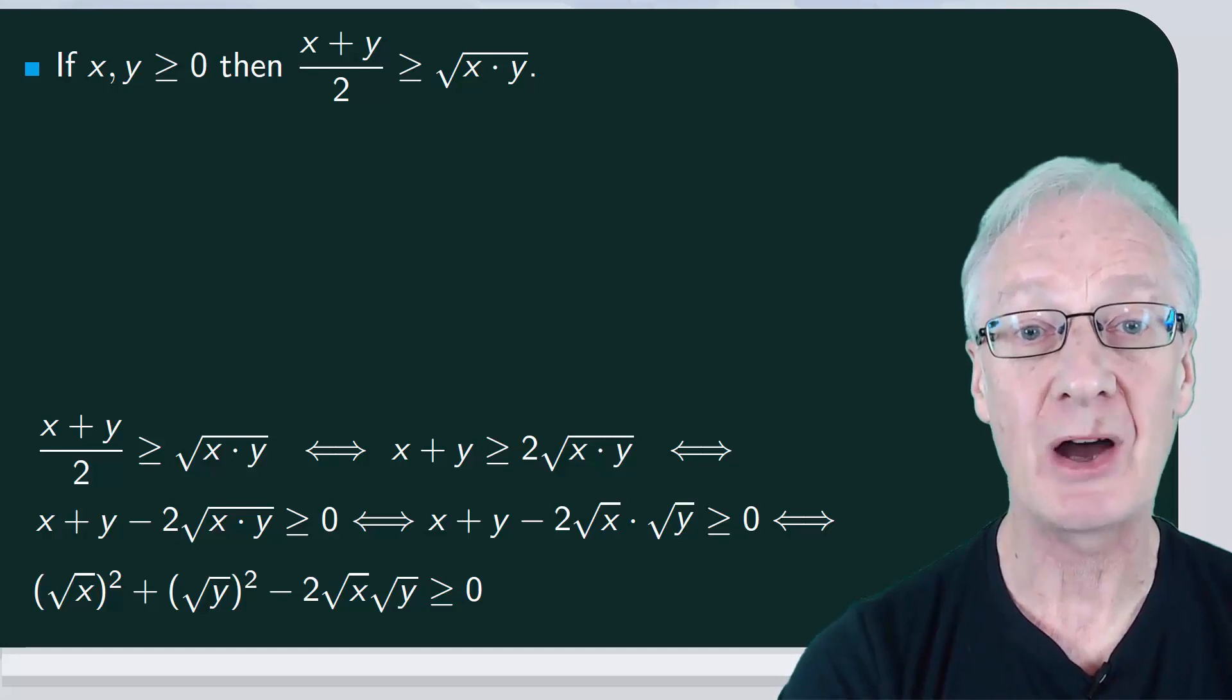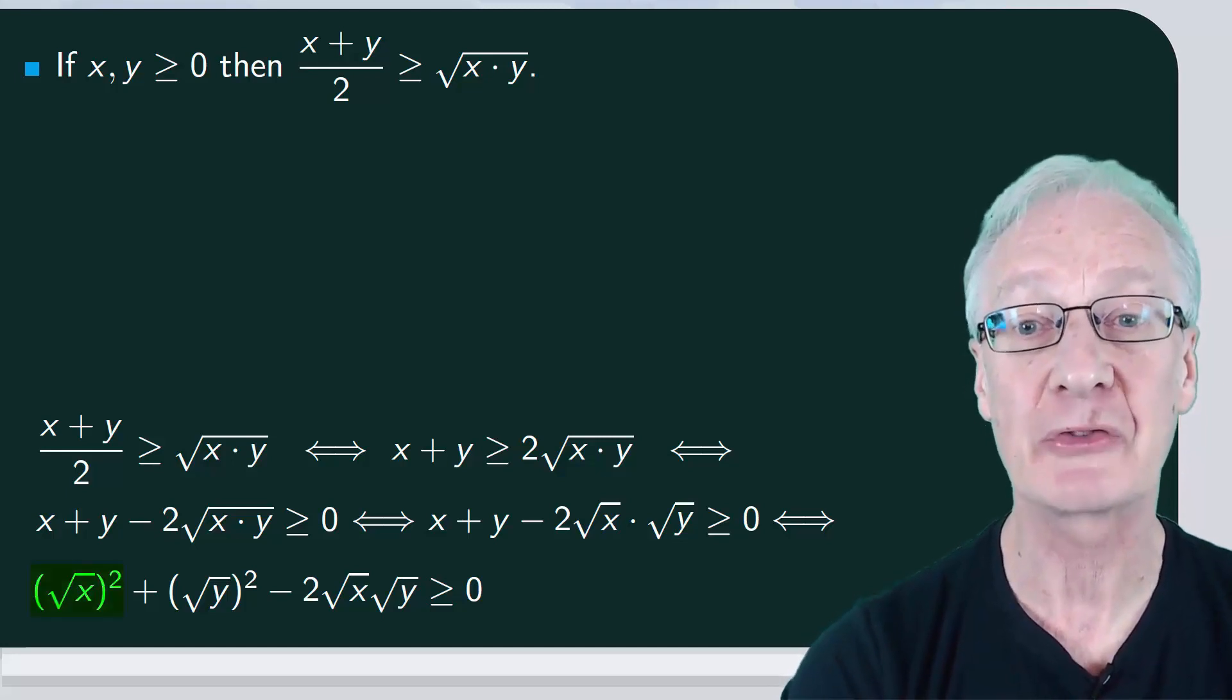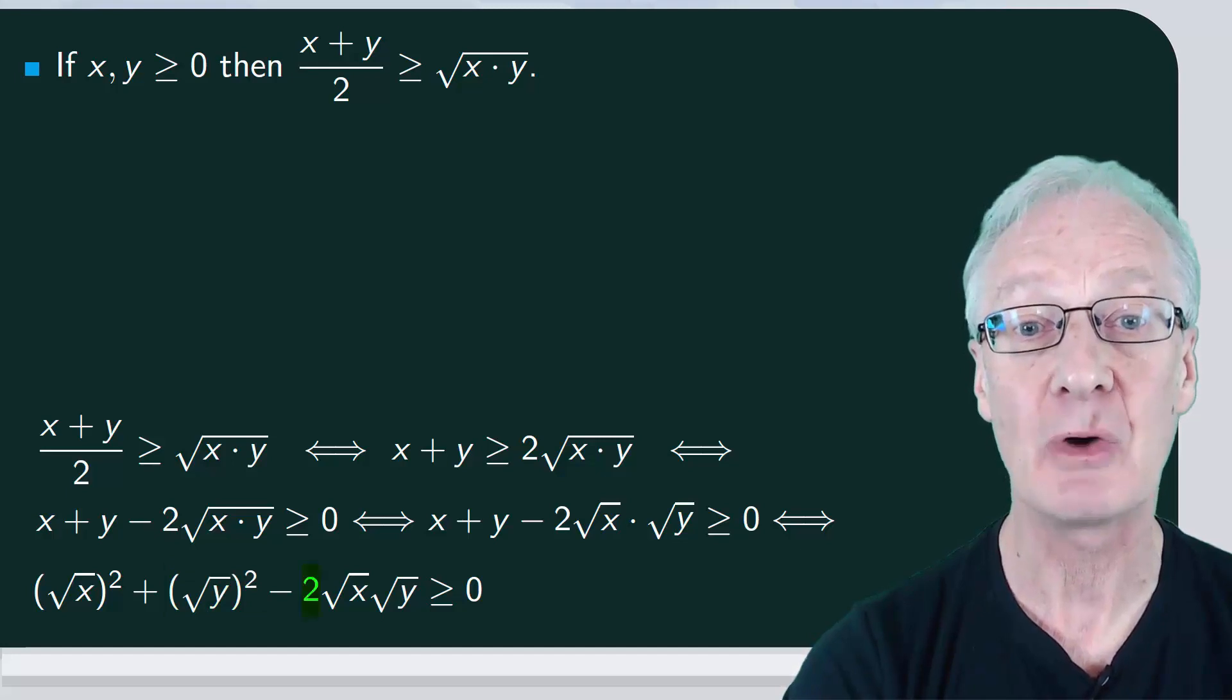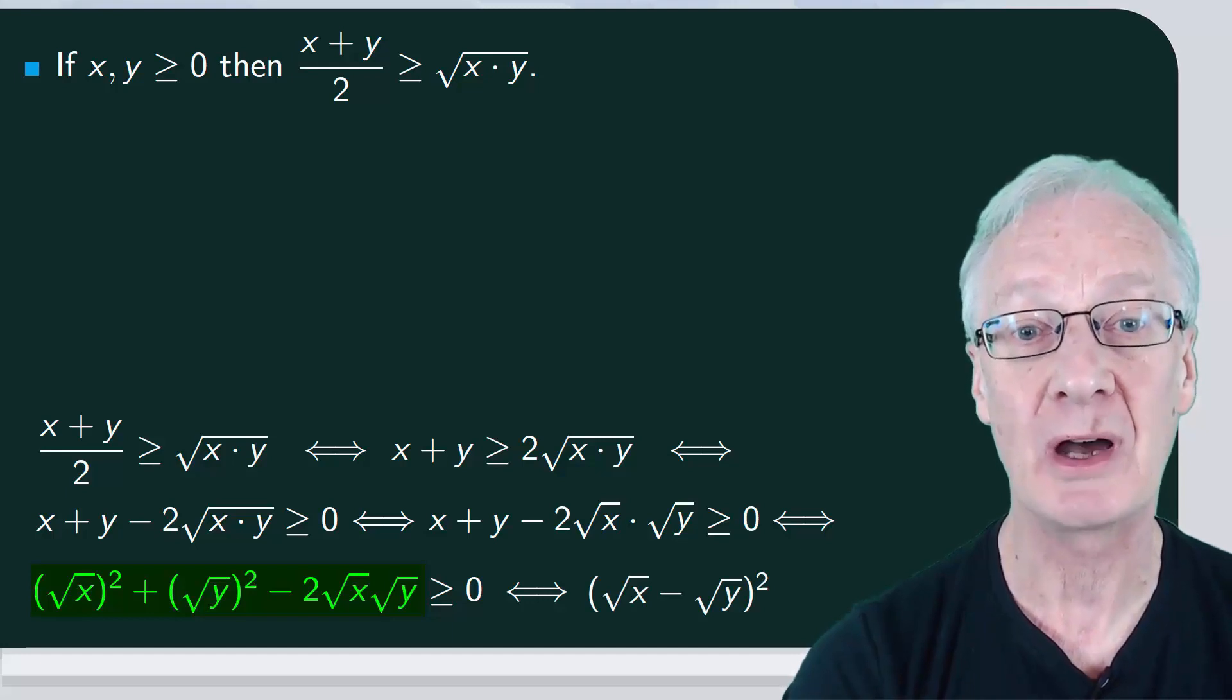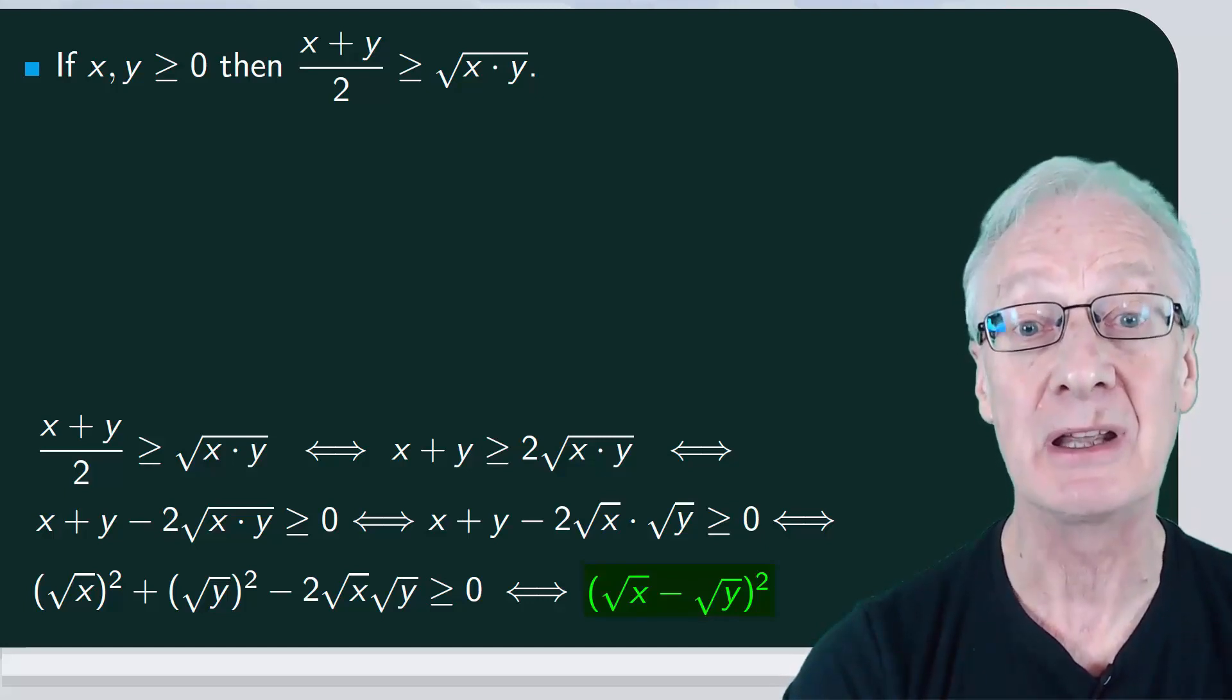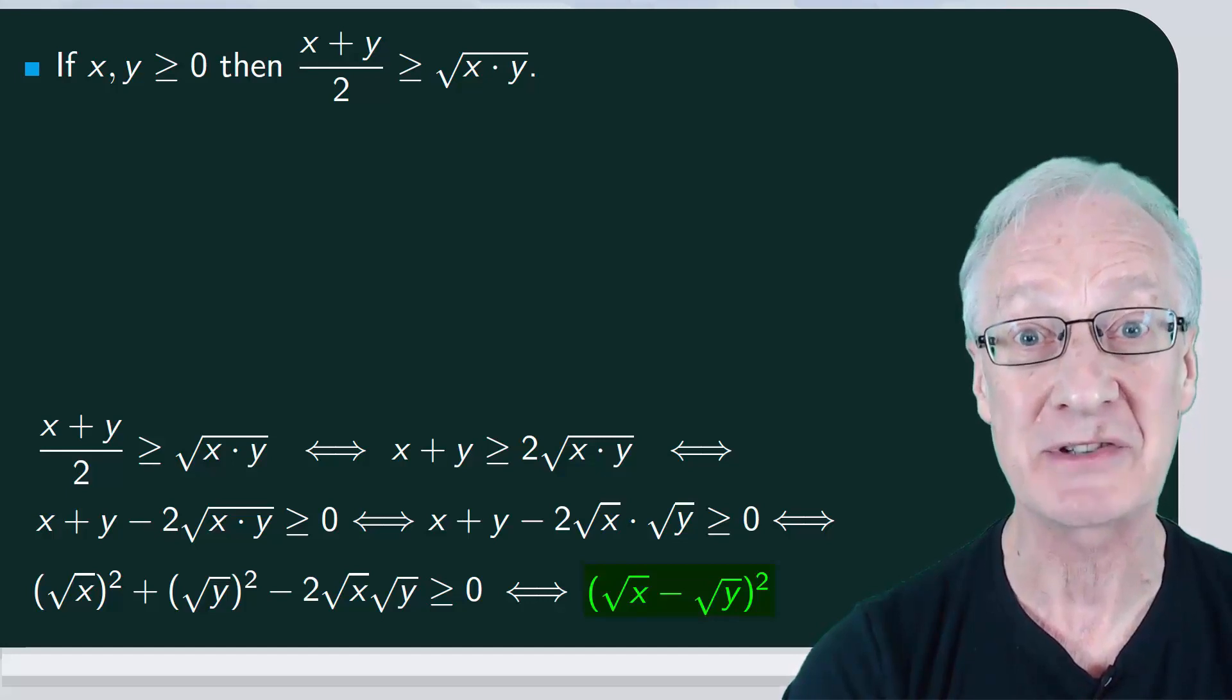Notice this is the square of a subtraction. We have the square of the first, the square of the second, and twice the first times the second. This is root x minus root y squared, which is greater than or equal to zero, because, as you know, the square of any real number is always greater than or equal to zero.